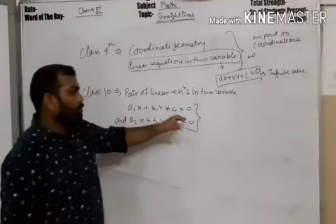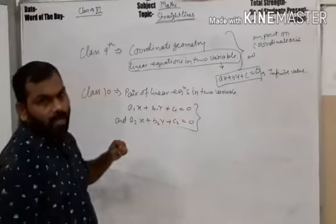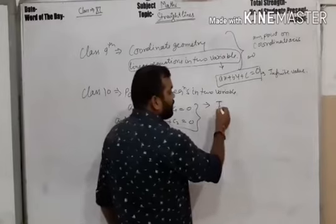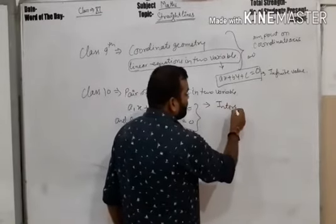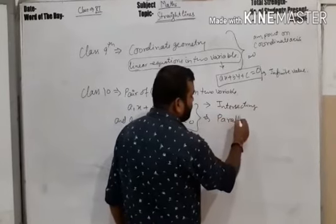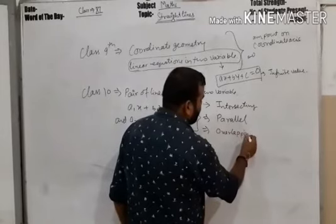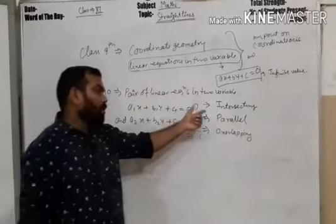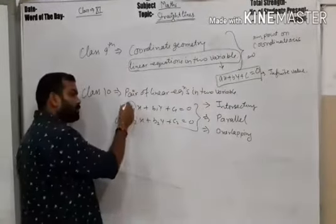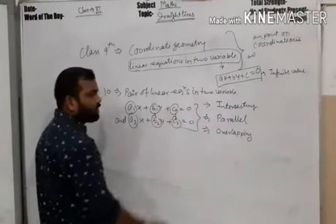Using these two equations we drew different lines and found their solutions graphically. We found that the lines can be in three cases: maybe intersecting, maybe parallel, or maybe overlapping. This can be determined graphically as well as using the coefficients.